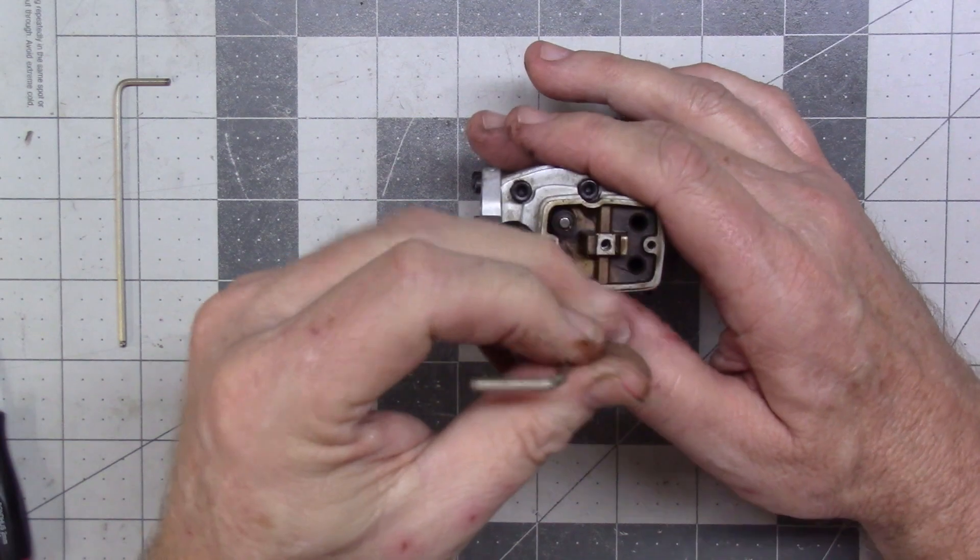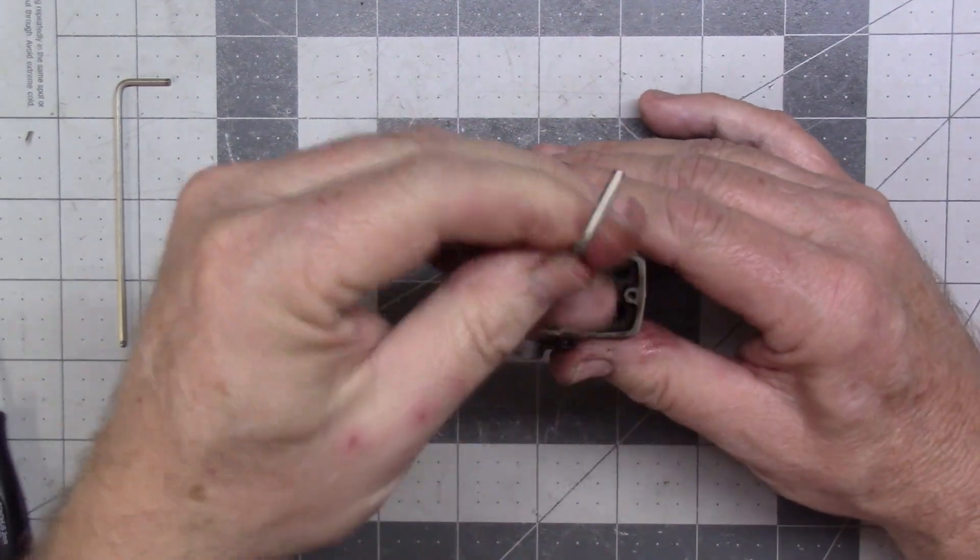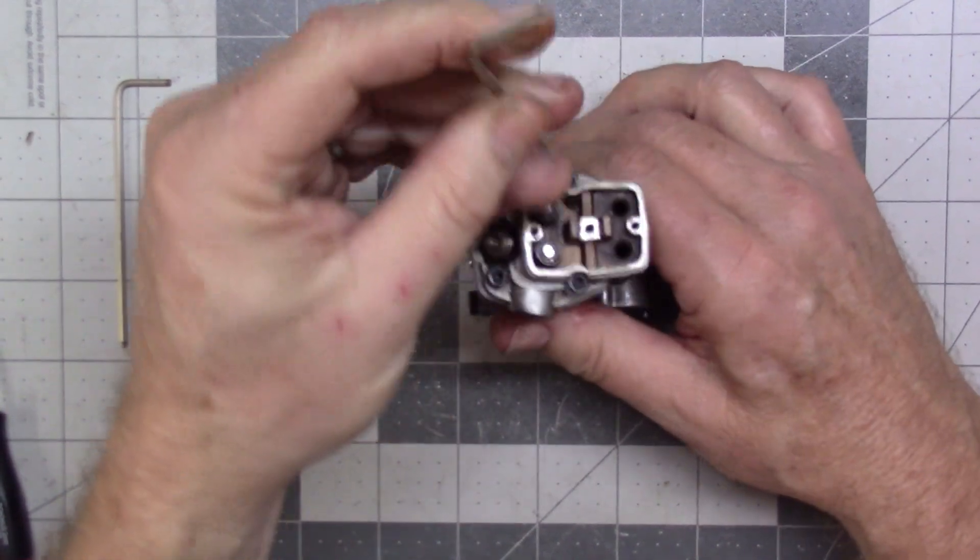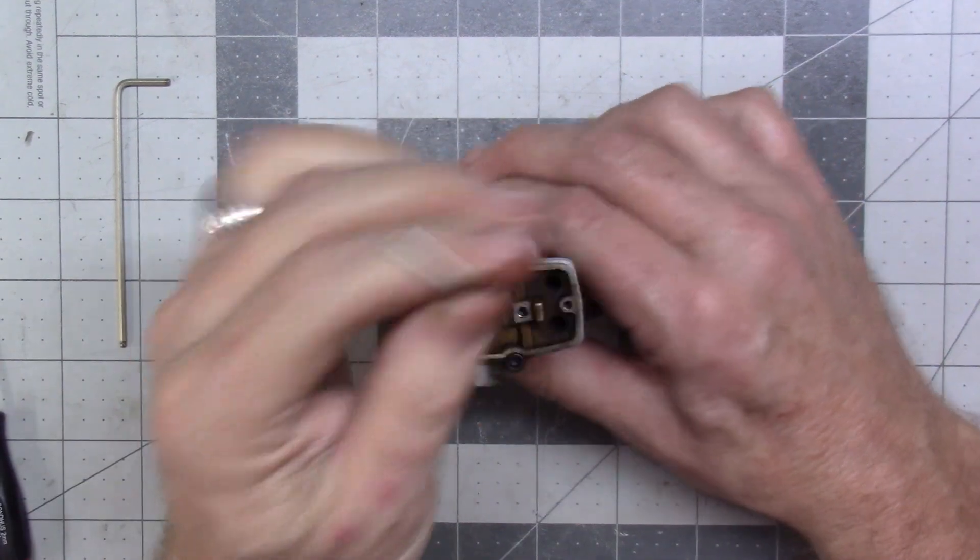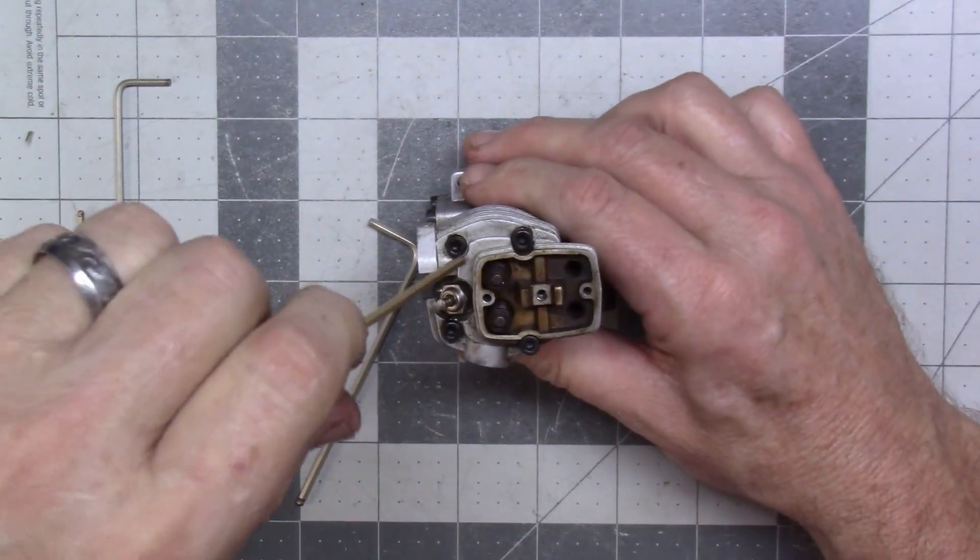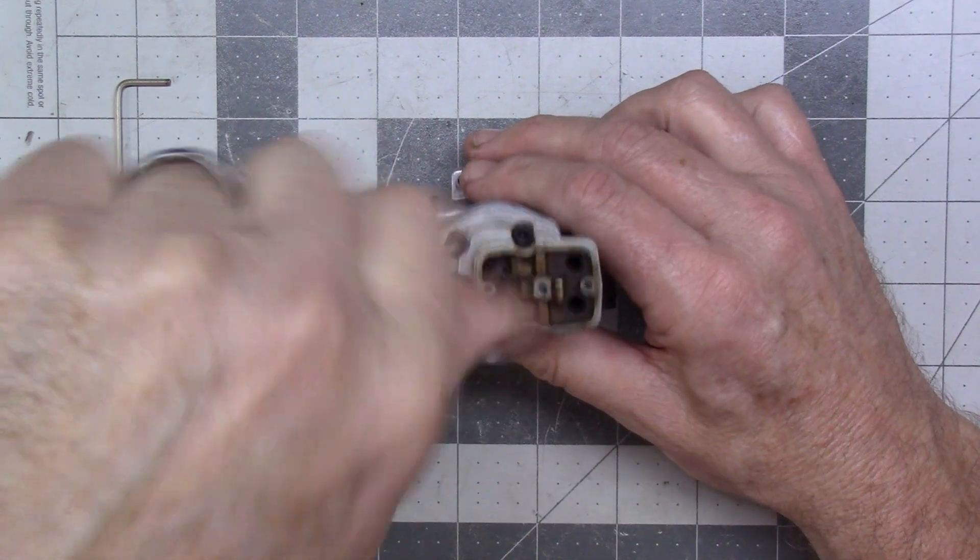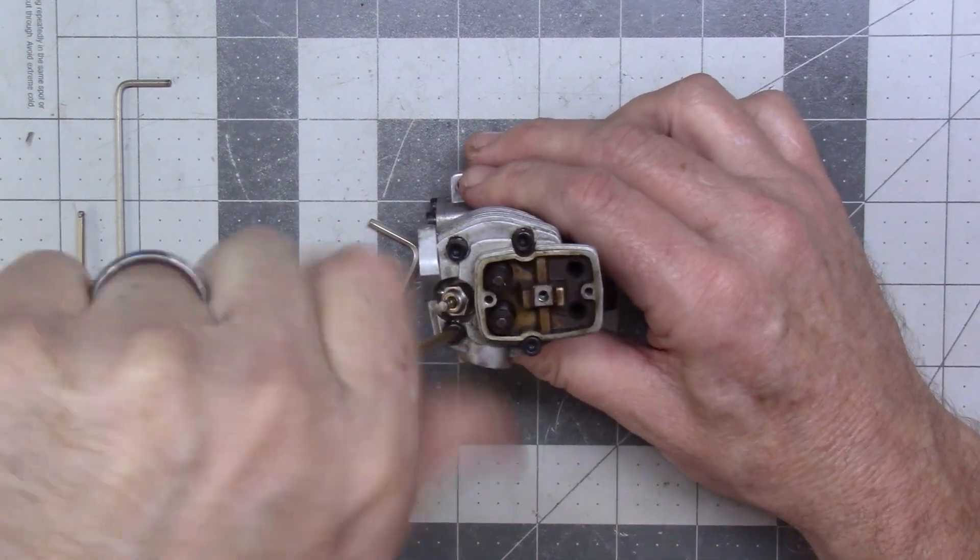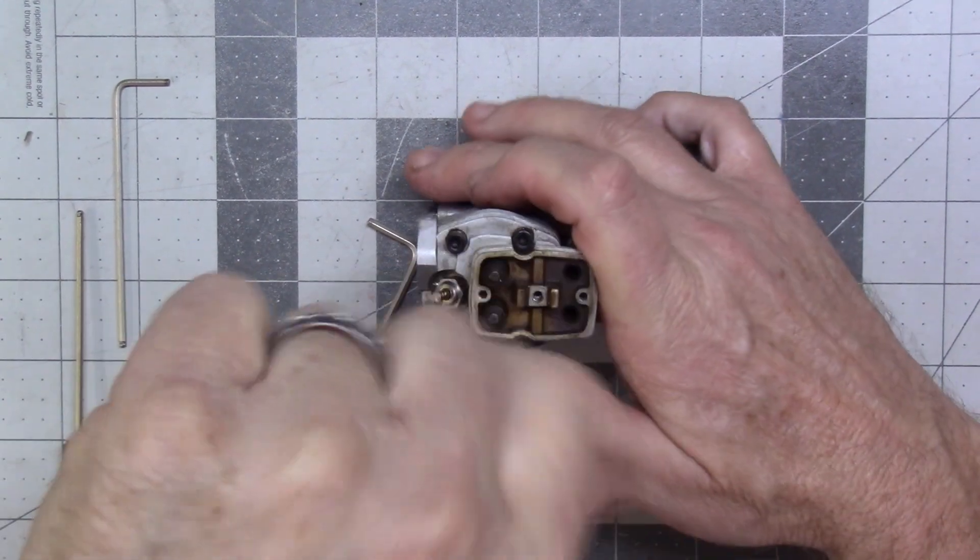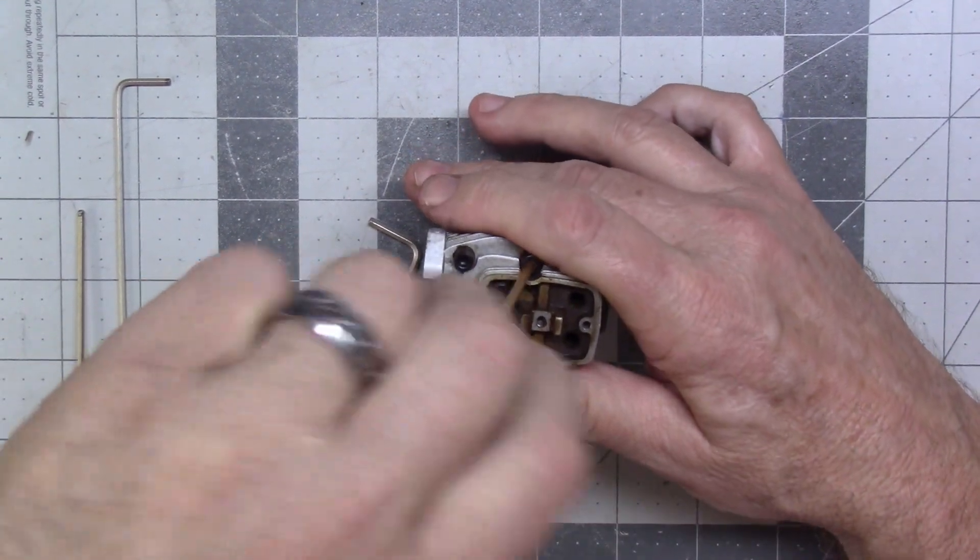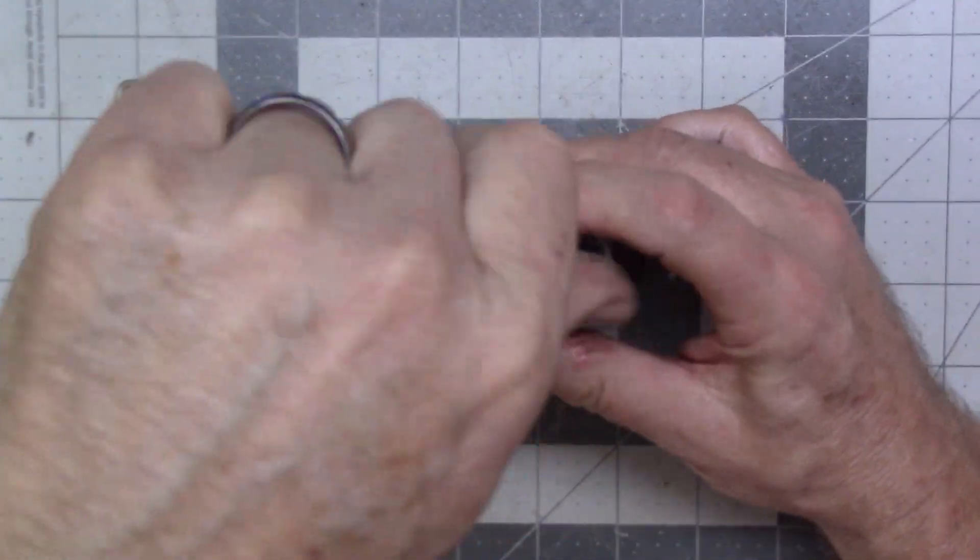So this engine, in theory, had 50 flights on it. It'll be interesting. You can already see how much carbon buildup. If we can assume that that's correct, if the person was correct in their assessment, the seller, 50 flights, it'll be interesting to see what the top of the piston looks like after theoretically 50 flights. Because I know a four-stroke engine typically doesn't carbon up the top of the piston nearly as fast as a two-stroke does.